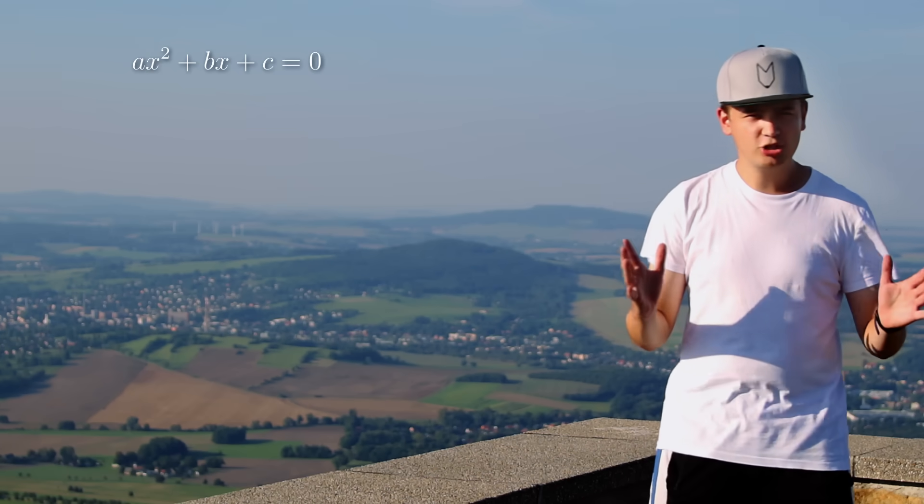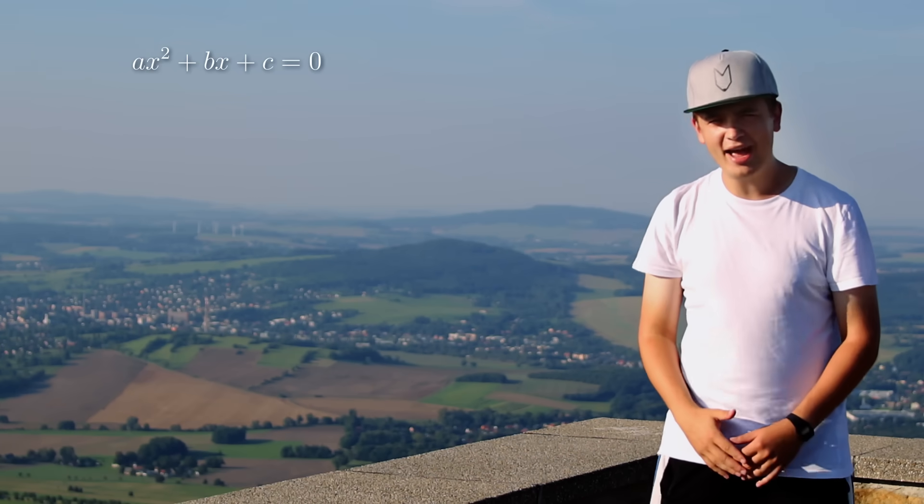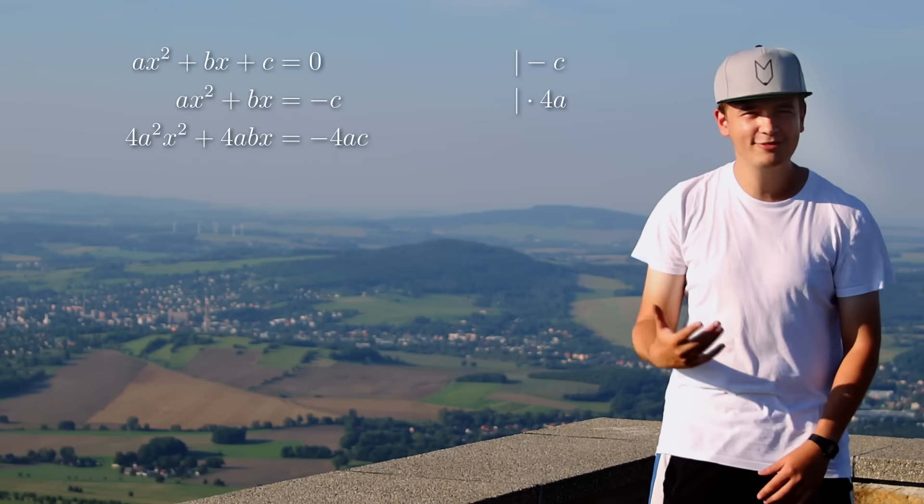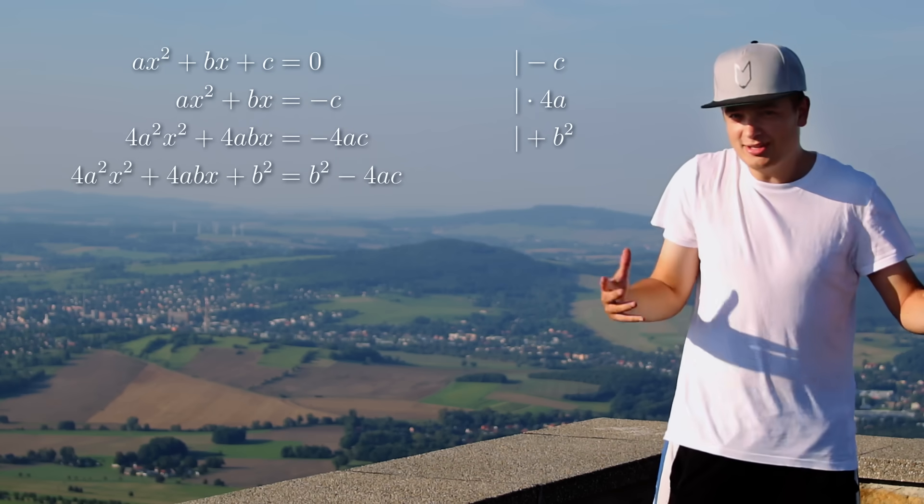Ok, let's start with our equation and our job is gonna be solving this now for x. So let's take minus c, multiply by 4a and if you now add b squared, it all looks way too complicated.